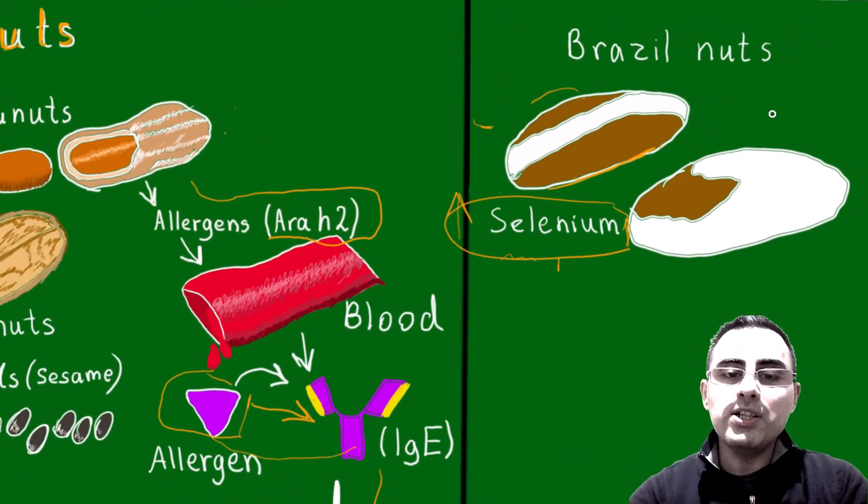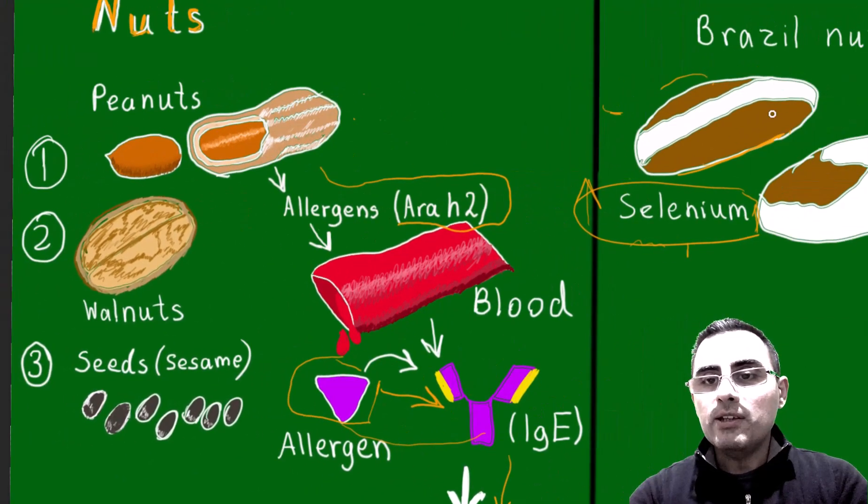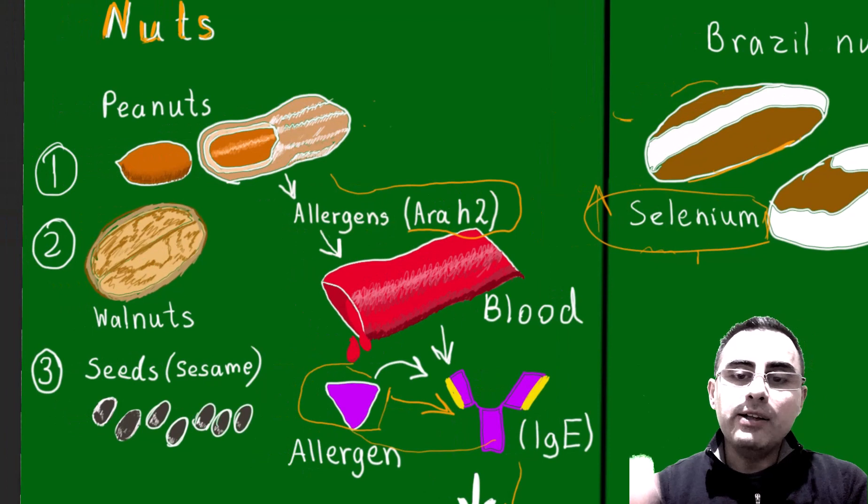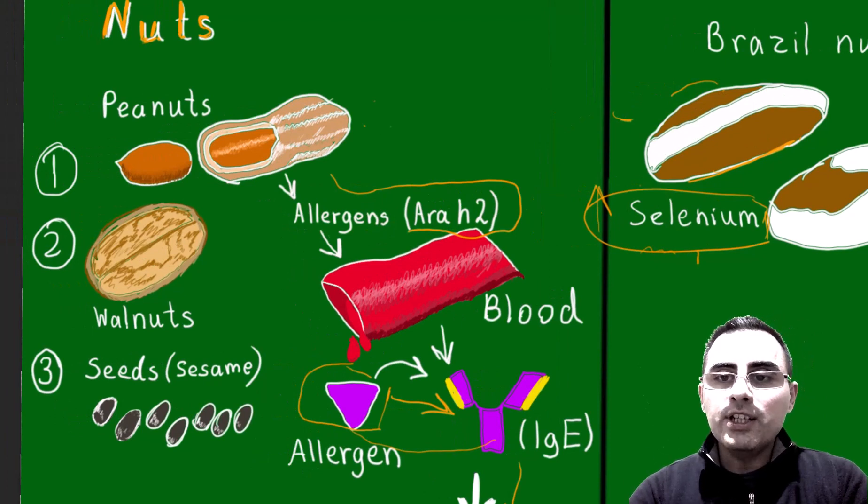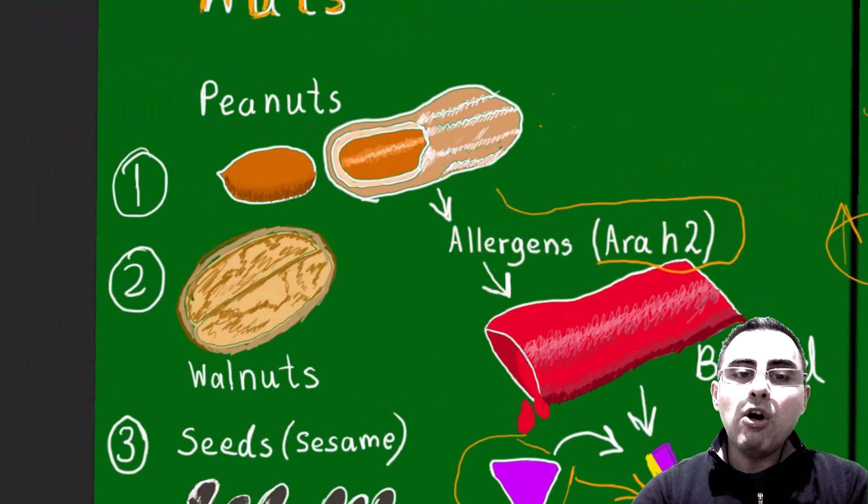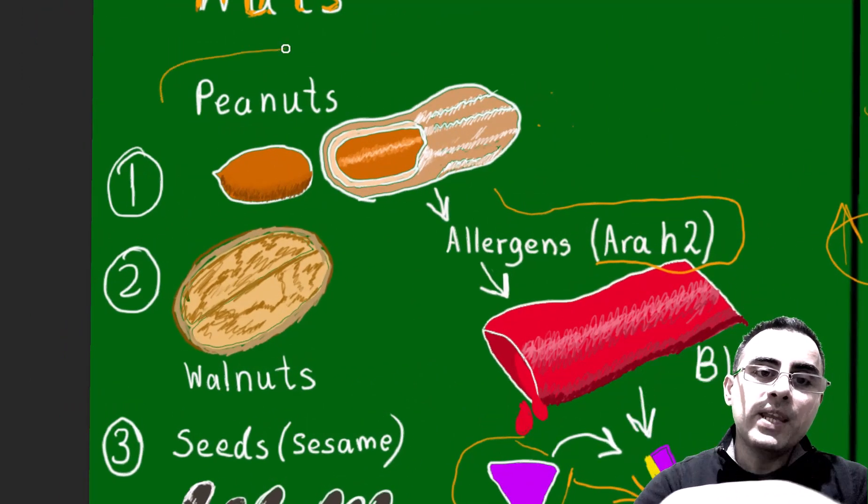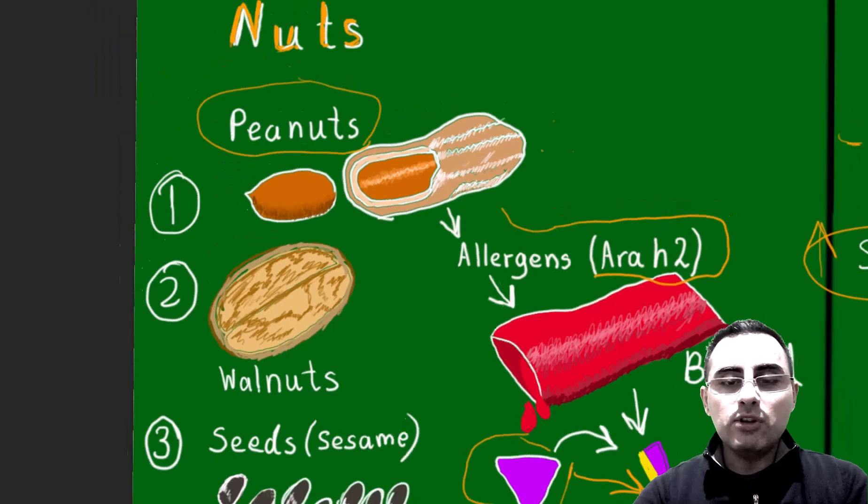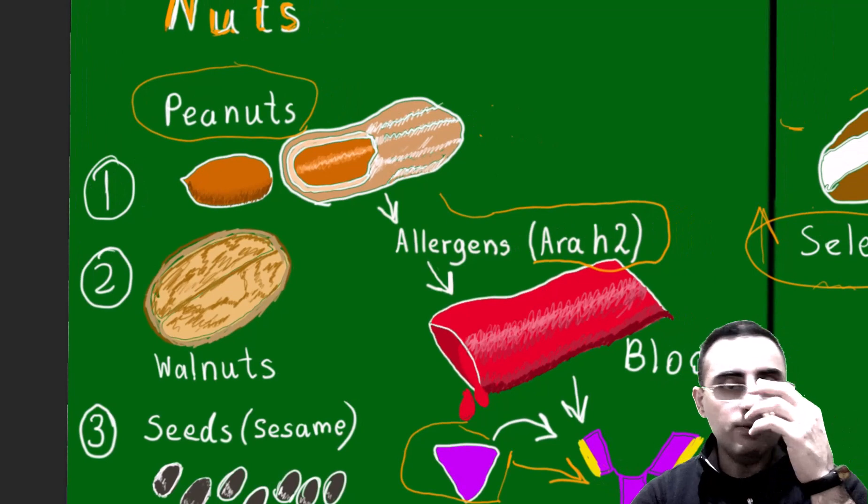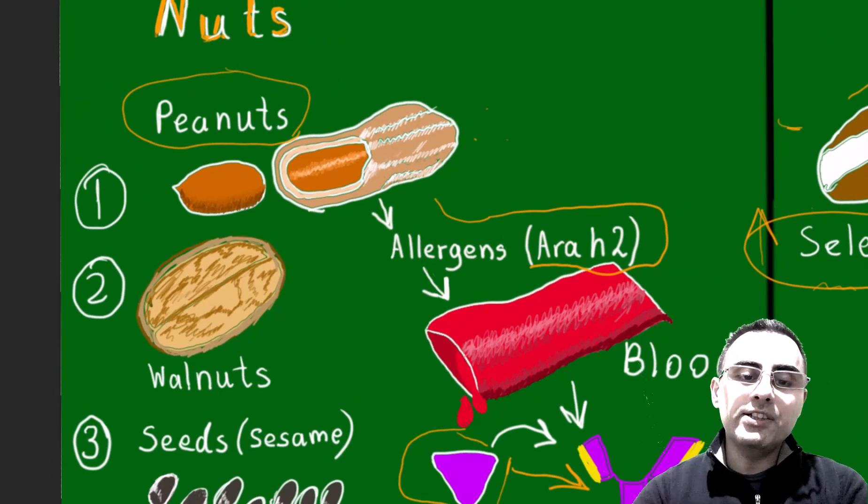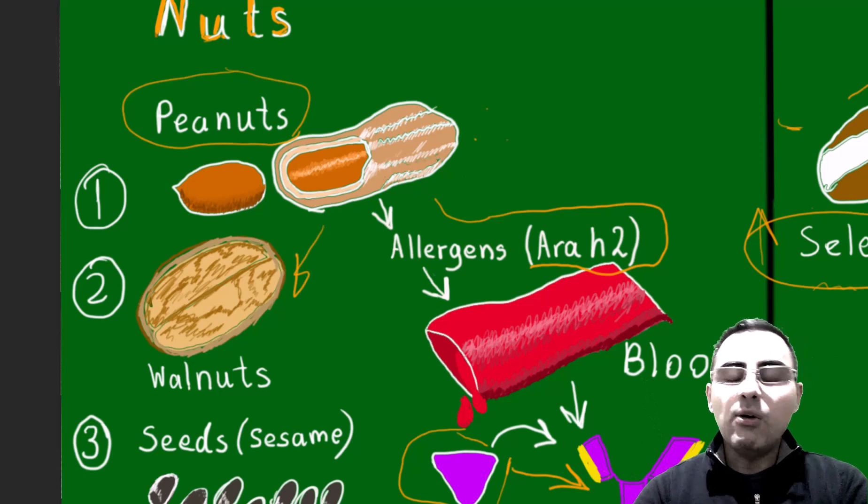It can cause especially gastrointestinal symptoms. So it's because of selenium, it's not because of allergy. But of course, these nuts can also cause allergic reactions. The most common allergen is peanuts. Also, cross-reaction is common. Cross-reaction means, for example, if you have allergy to peanuts, you can have allergy to walnuts also, or hazelnuts also.